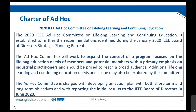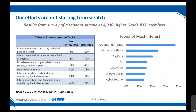The charter is to expand the concept of a program focused on lifelong educational needs of our members and potential members, with primary emphasis on industry practitioners and a goal to grow our membership. We recognized we already had some data about what members were interested in. From a 2019 survey, topics of interest include artificial intelligence and Internet of Things — not terribly surprising. Members are most interested in things in their technical field of interest, and not so much in soft skills or things outside their field.